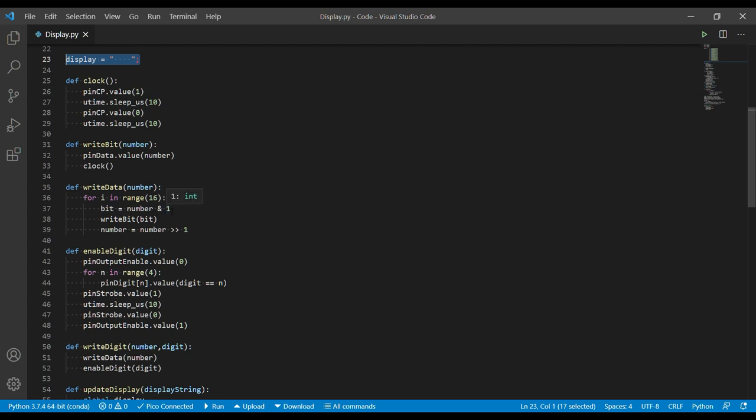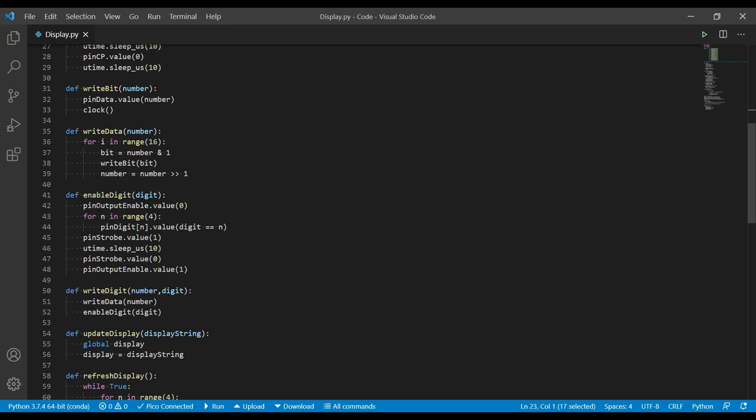To enable our digits, we first turn the output enable off so we don't want the display to flicker while we're changing it. We then scan through each of the output pins. And if the digit that we're interested in is that digit, then we'll turn it on. Otherwise we turn it off. We then write the data to the output buffer, wait a little time, turn that strobe line off again. And then we finally turn on the output enable, so then the digit appears on the screen.